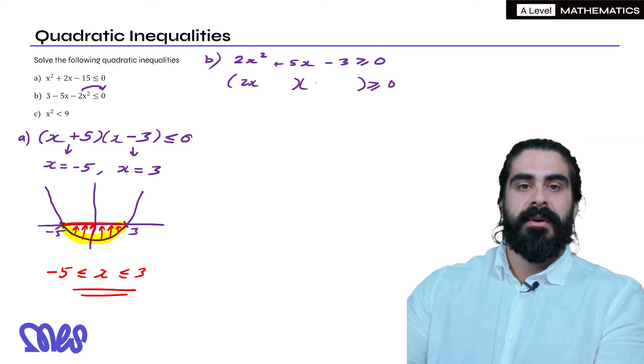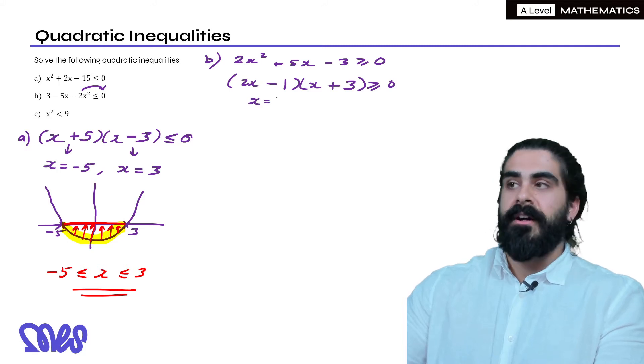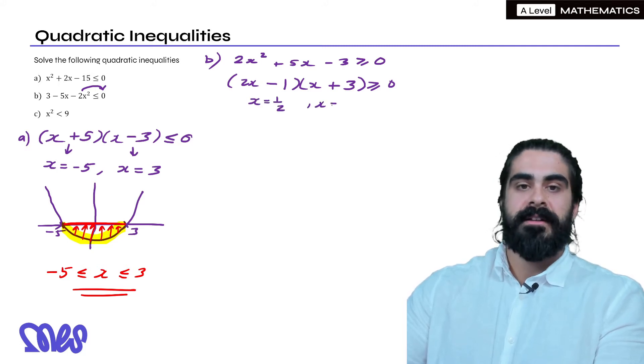So we're going to get 2x and x. Now to make 5x and we have 3 here we're going to need 3 and 1. Then 2x times 3 gives you 6x and 1 times x gives you x. So to make plus 5x we need this to be positive and this to be negative. So our roots here are x equals 1 half and x equals minus 3.